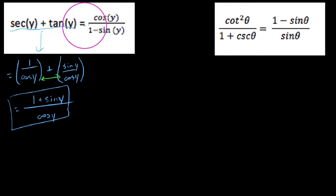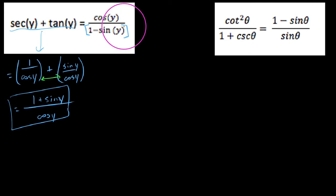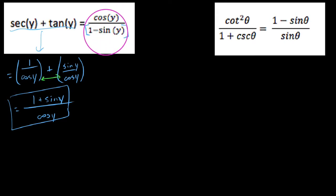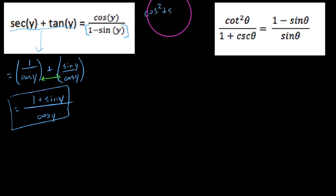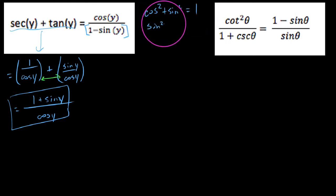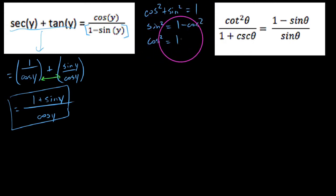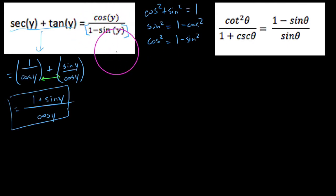On the right-hand side, I want everybody to recognize that we have 1 minus sine in the denominator. It's not squared, but in a Pythagorean sense, recall that cosine squared plus sine squared always equals 1. So sine squared equals 1 minus cosine squared, and cosine squared equals 1 minus sine squared. If we were to take the denominator times its conjugate, we get a difference of two squares, because the middle terms cancel out.